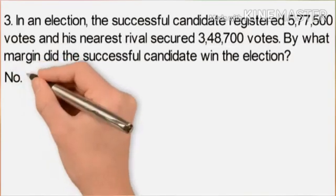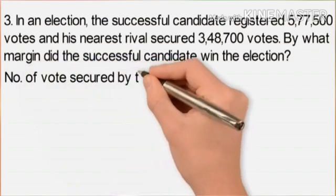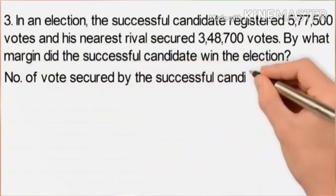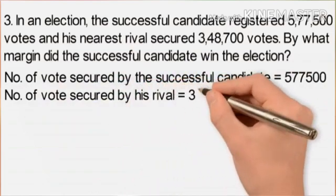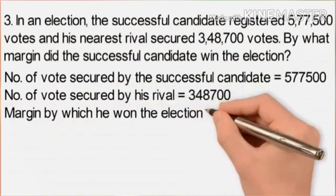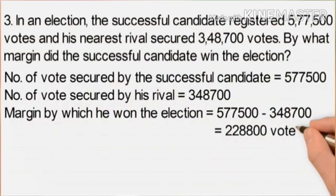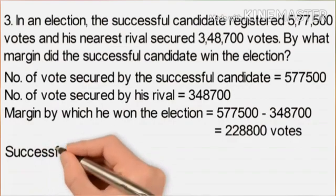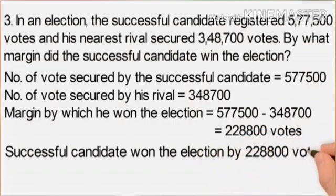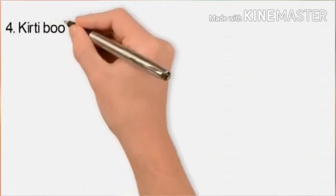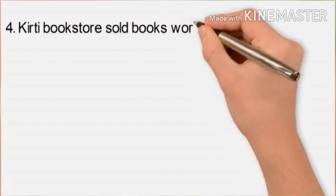Number of votes secured by the successful candidate equals 5,77,500. Number of votes secured by his rival equals 3,48,700. The margin by which he won the election equals 5,77,500 minus 3,48,700, which equals 2,28,800 votes. Therefore the successful candidate won the election by 2,28,800 votes.